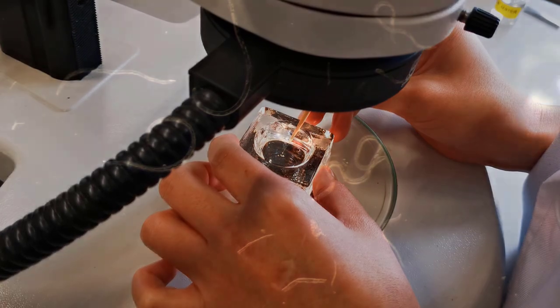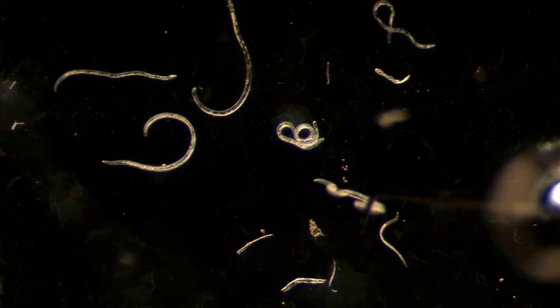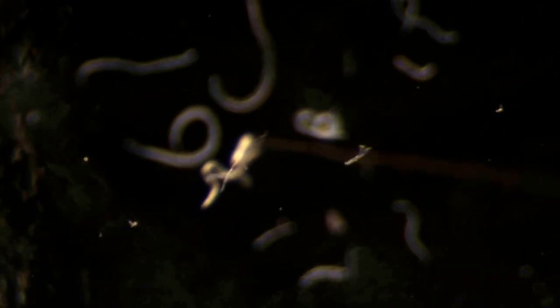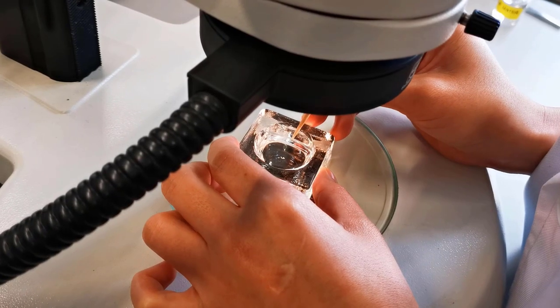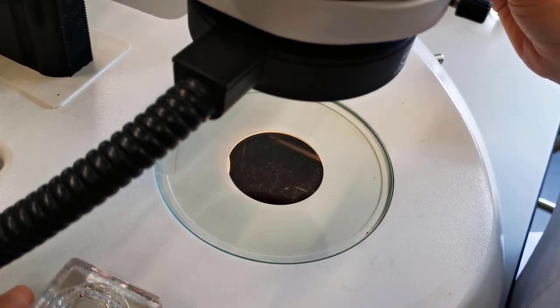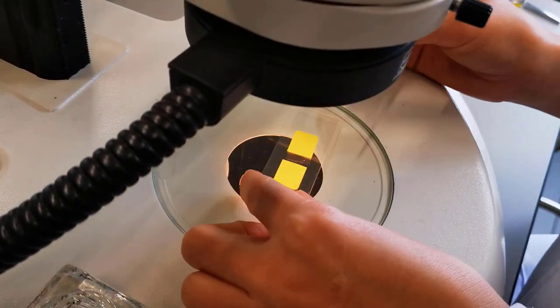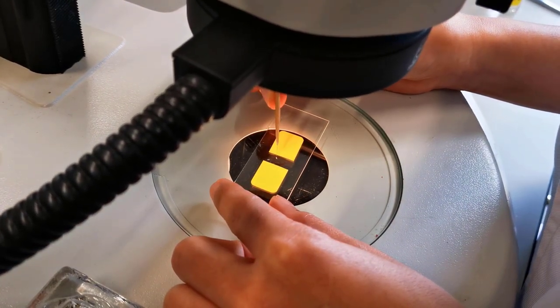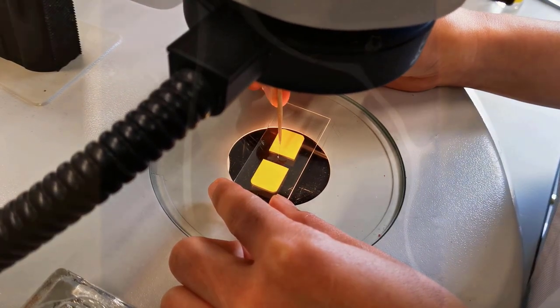We will now pick out a live nematode using a worm picking tool from the nematode extract obtained from our soil sample. Transfer the nematode in the water drop on the slide and make sure it is not floating on the water drop but pushed down completely on the glass surface.